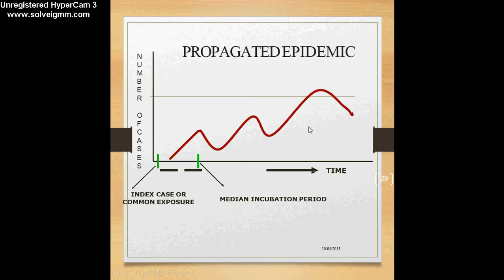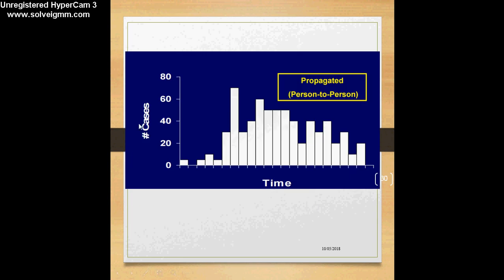This is another type of epidemic curve. Unlike the first, there are three peaks, and with every peak the frequency or number of cases goes on increasing. This is a propagated epidemic — spreading from one person to another. For all diseases where we expect person-to-person transmission, we can have an epidemic curve like this with multiple peaks and a rising number of cases. This histogram shows a propagated or person-to-person type of transmission of disease.